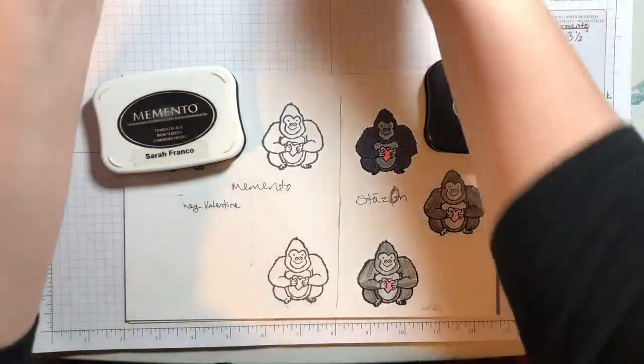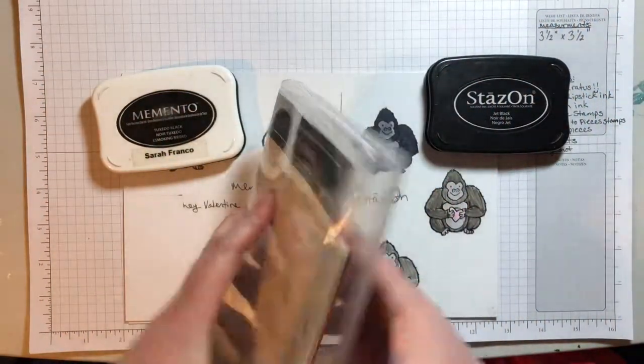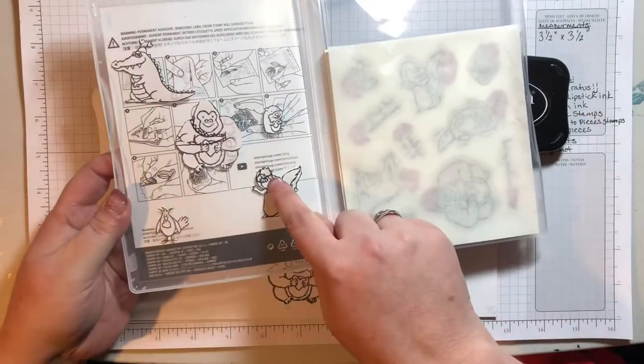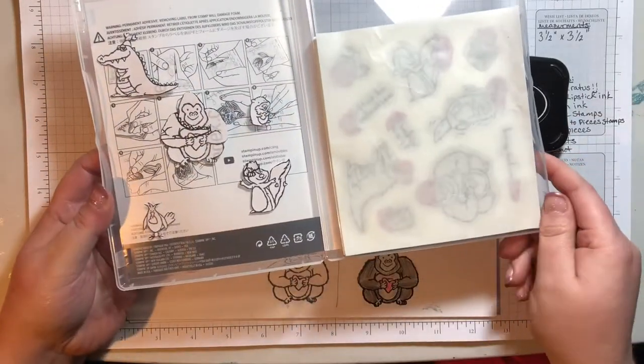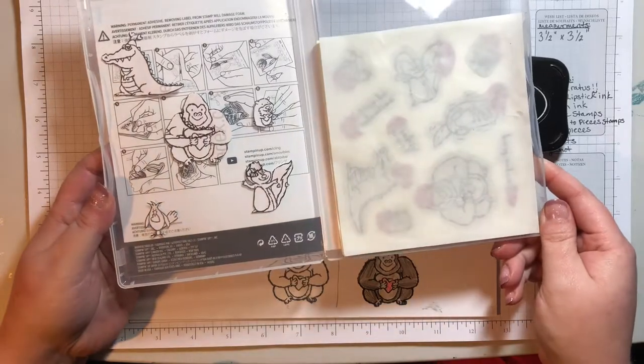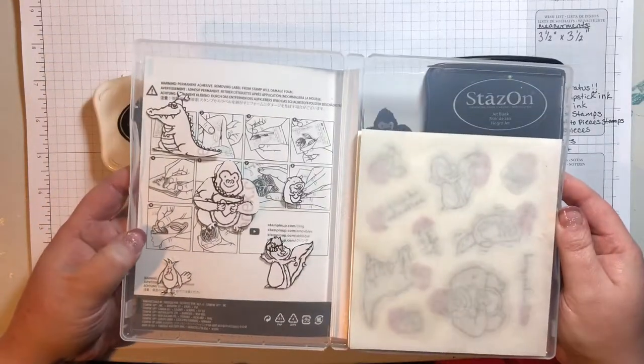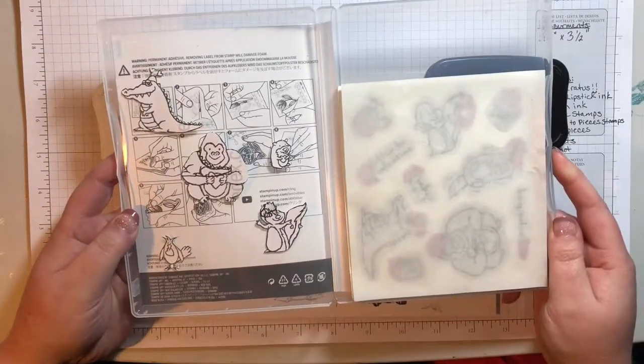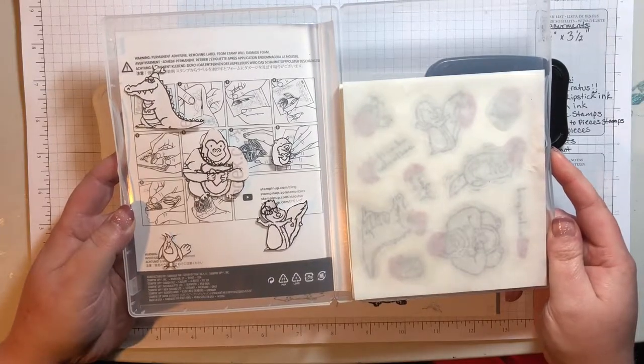So to do this technique, we used some masking. So I stamped each of my characters at the sticky end of a post-it note. And I'm going to be using the Stamparatus tool for placement so that you can get the placement correctly every time.